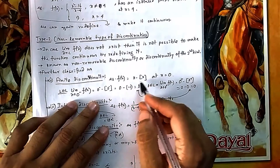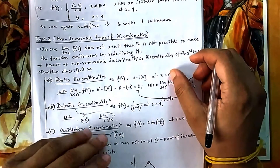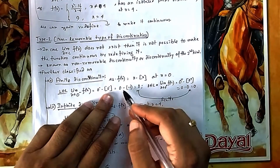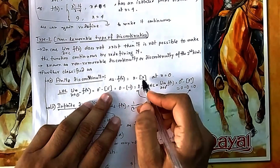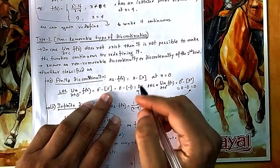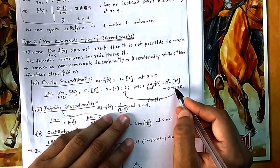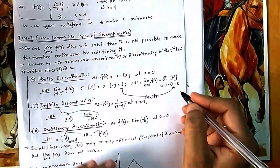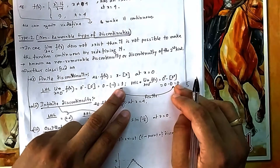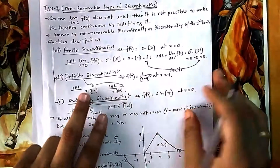Finite discontinuity: consider the greatest integer function and checking the limit at 0. The left-hand limit (0⁻) gives minus 1, because a value slightly less than 0 — like −0.0001 — has greatest integer equal to −1. But the right-hand limit (0⁺) gives 0, since a value slightly above 0 has greatest integer 0. Since LHL ≠ RHL, the limit does not exist. It is called finite discontinuity because both LHL and RHL are finite values.